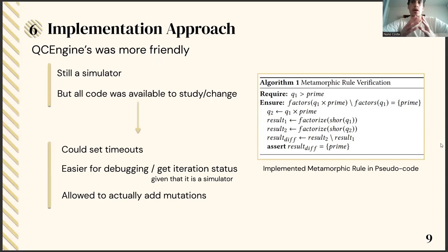As such, we pivoted to the second option, which was QCEngine Simulator implementation of Shor's. Although still a simulator, the code was already readily available, which allowed us to track what was going on more easily, as well as adding a crucial part of our project, which was to mutate the Shor's implementation. On the right, we can see a simple pseudocode representation of the algorithm that verifies the first metamorphic rule, which we used in QCEngine Simulator.